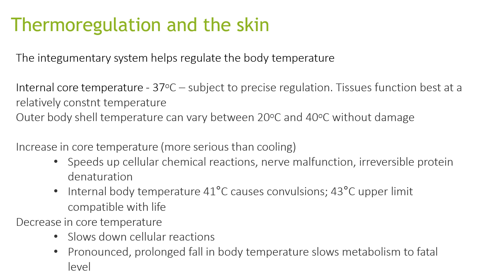Looking at thermoregulation of the skin: the integumentary system helps regulate body temperature. Internal core temperature is 37 degrees, subject to precise regulation, and tissues function best at a relatively constant temperature. The outer body shell temperature can vary between 20 and 40 degrees without damage. An increase in core temperature results in increased cellular chemical reactions, nerve malfunctions, and irreversible protein denaturation. An internal temperature of 41 degrees causes convulsions and above 41 degrees is not compatible with life. A decrease in core temperature slows down cellular reactions, and prolonged low body temperatures slow metabolism to fatal levels.